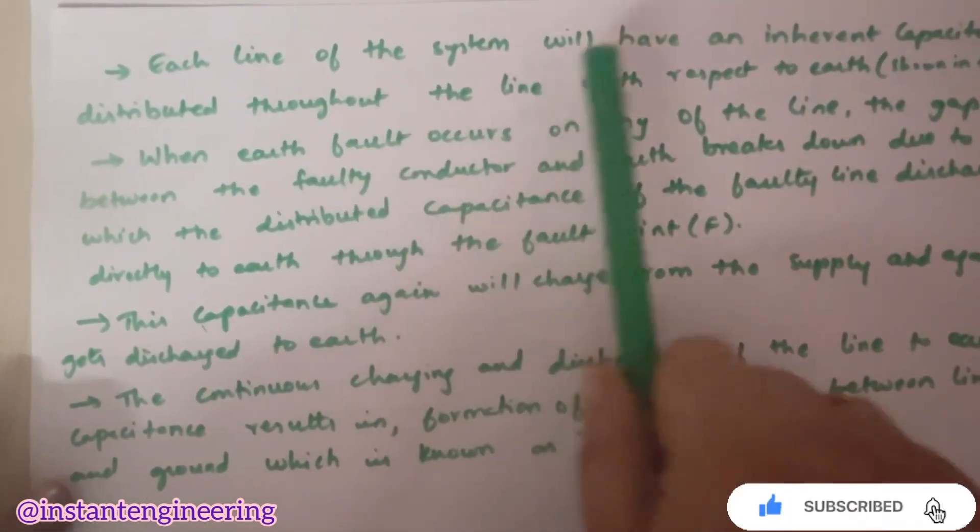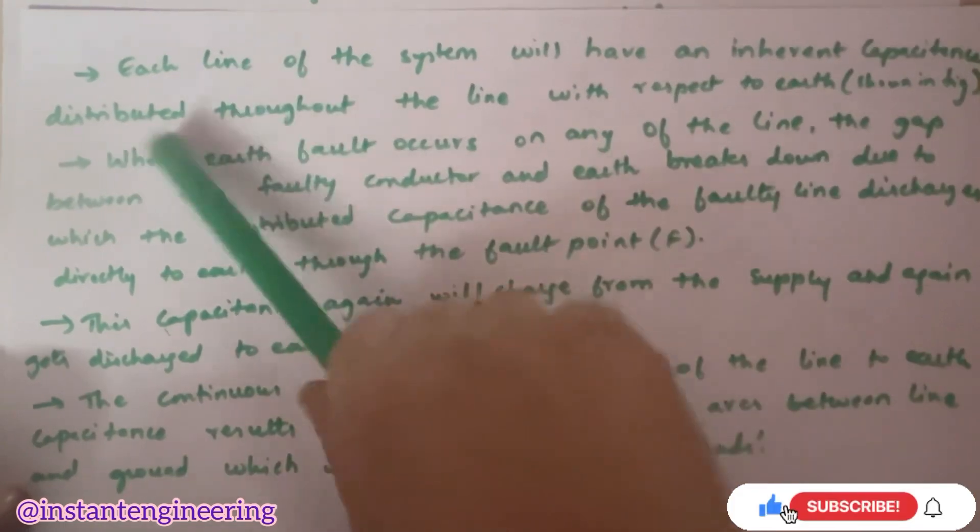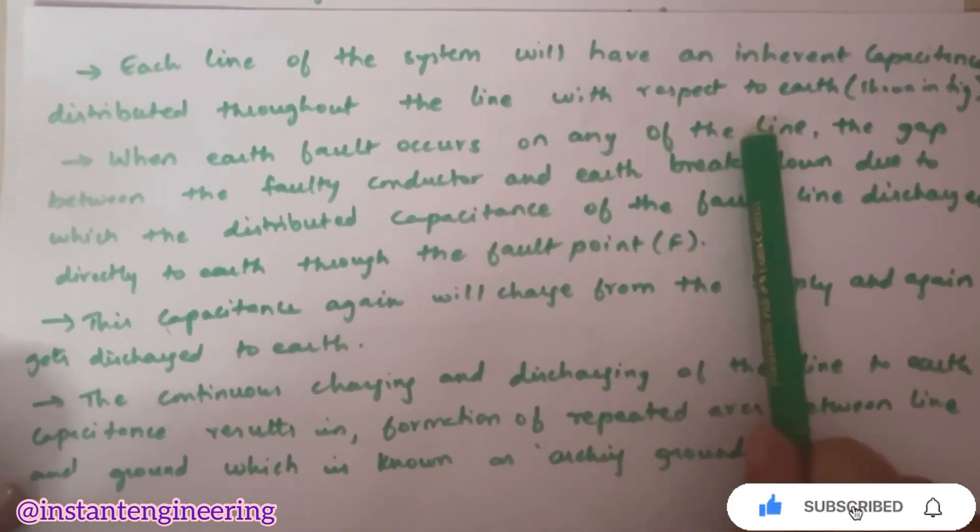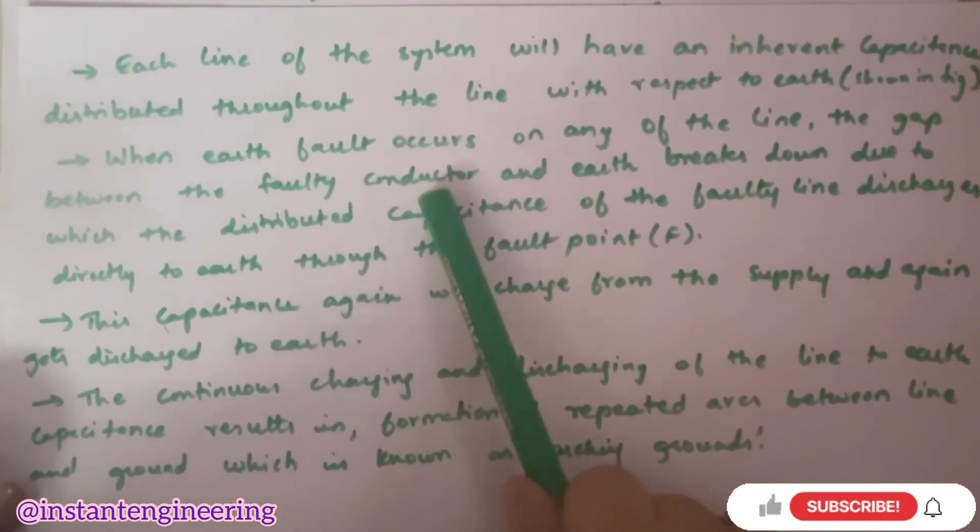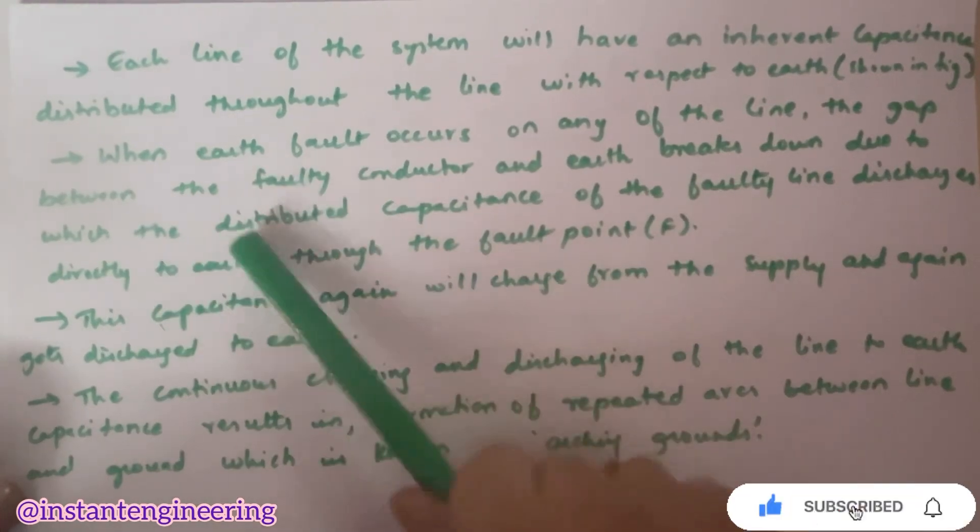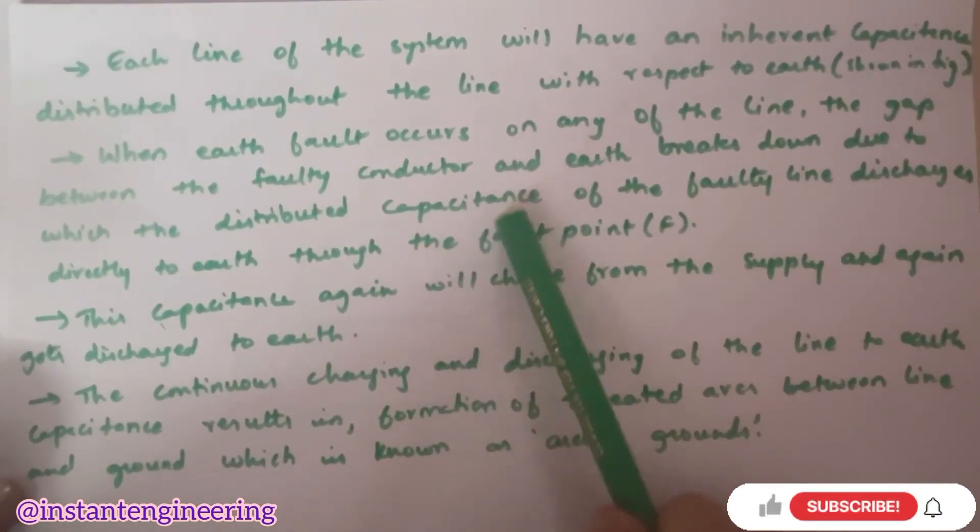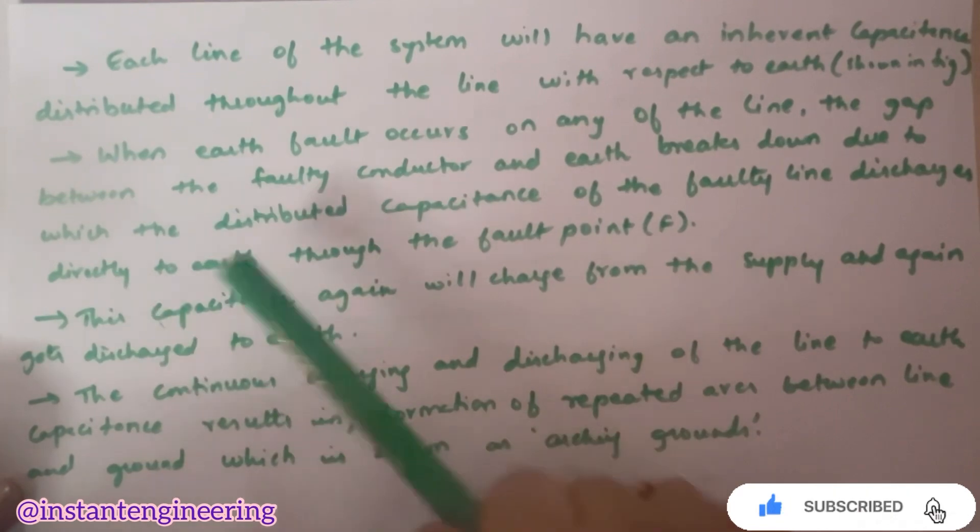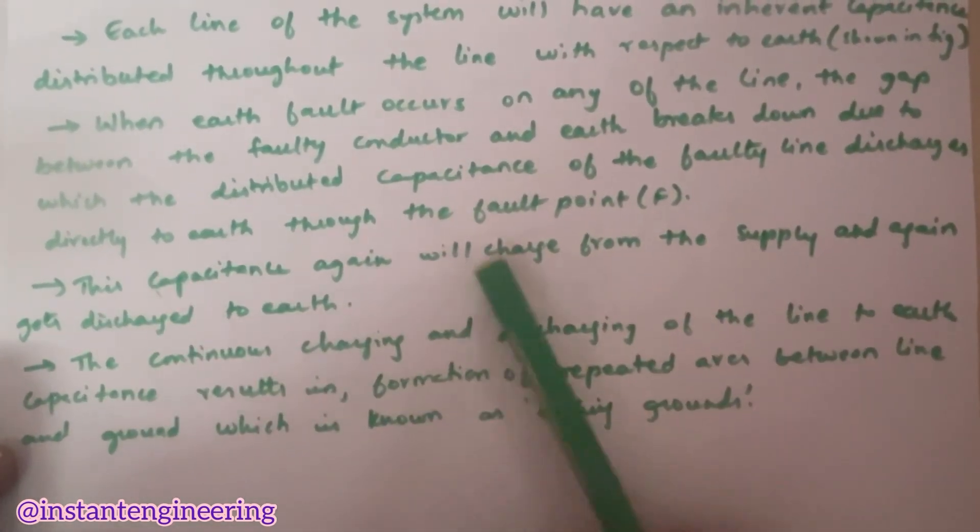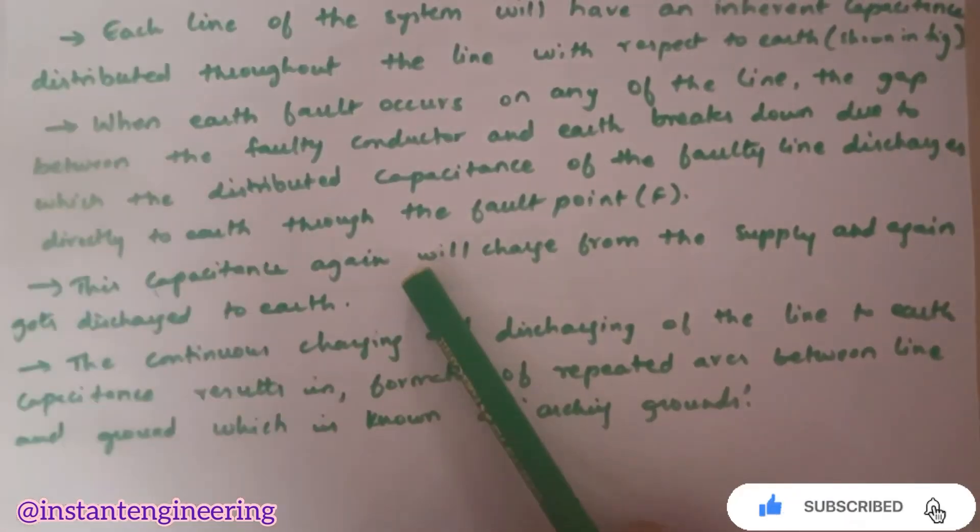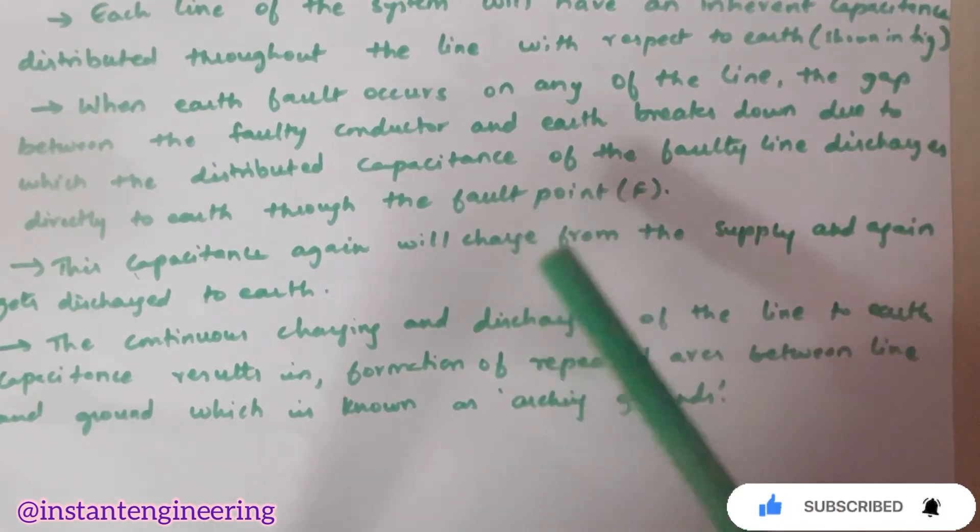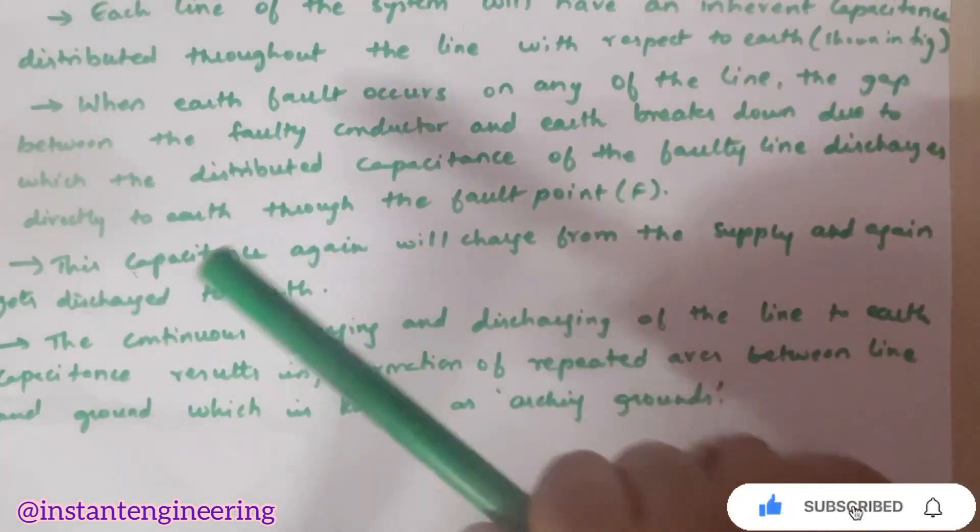Each line of the system will have an inherent capacitance distributed throughout the line. When earth fault will occur on any of the line, the gap between the faulty conductor and the earth breaks down. Due to which, the distributed capacitance of the faulty line will discharge directly to the earth to fault point F. This capacitance again will charge. Capacitance is nothing but charging and discharging.